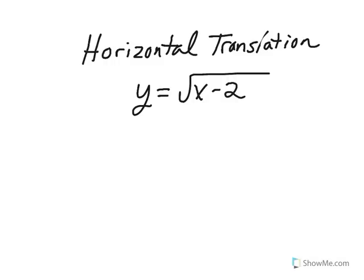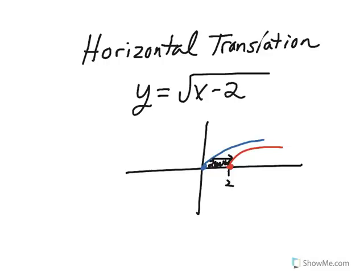Take a look at the following problem. Which direction do you think it will be translated? Please pause the video and try to solve the problem. As you may have seen, the graph in blue is y equals square root of x. That's the parent function. That gets shifted 2 units to the right to produce y equals the square root of x minus 2 in red. Please pause the video and copy this into your notes.